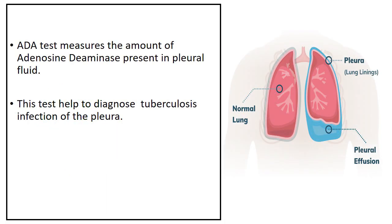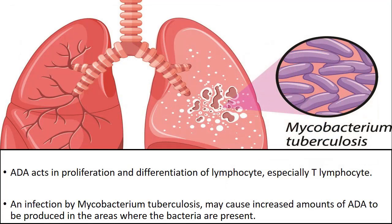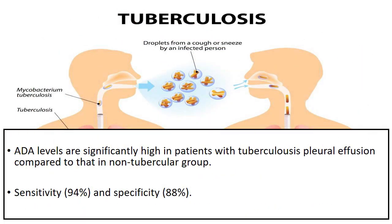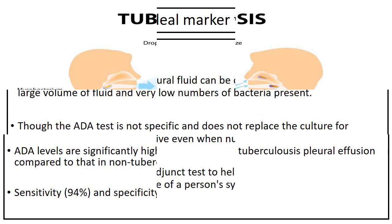The ADA test measures the amount of ADA present in pleural fluid in order to help diagnose or rule out a tuberculosis infection of the pleura. ADA acts in the proliferation and differentiation of lymphocytes, especially T-lymphocytes. An infection by Mycobacterium tuberculosis may cause increased amounts of ADA to be produced where the bacteria are present. ADA levels are significantly high in patients with tuberculous pleural effusion compared to those in the non-tubercular group, with a sensitivity of 94% and specificity of 88%.